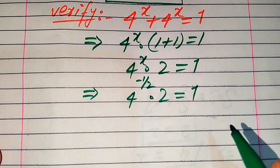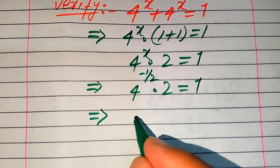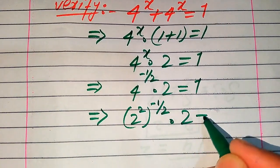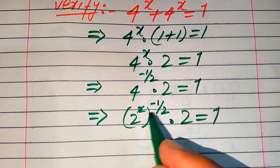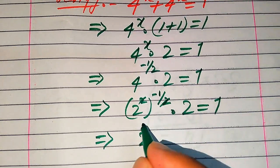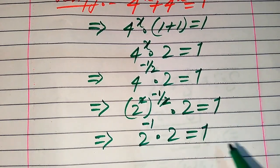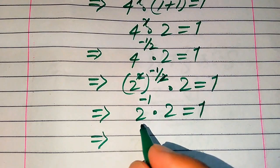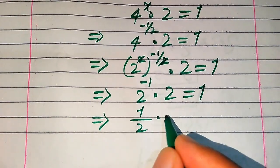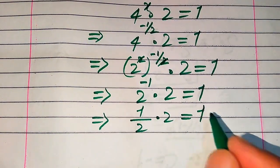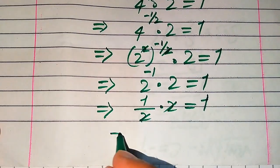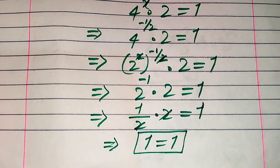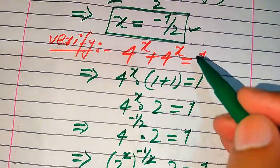We write 4 in prime factor form: 2 squared, with its whole power minus 1 over 2, multiplied by 2 equals 1. Applying the exponent multiplication rule, this 2 from the exponent cancels with this 2, and we get 2 inverse multiplied by 2 equals 1. We convert 2 inverse into fraction form: 1 over 2 multiplied by 2 equals 1, and this 2 cancels with this 2, giving us 1 equals 1. This confirms that x equals minus 1 over 2 satisfies the given question statement.